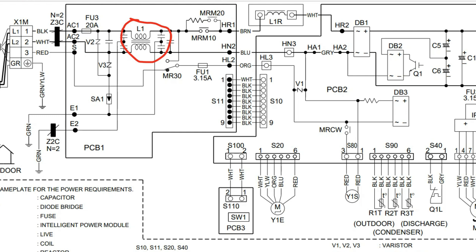Once that coil gets energized, these switches will close — and these are the switches to the main power components in your system. The iron core provides another layer of filtering; it strengthens the magnetic field and helps filter out higher frequencies that are unwanted in this circuit.